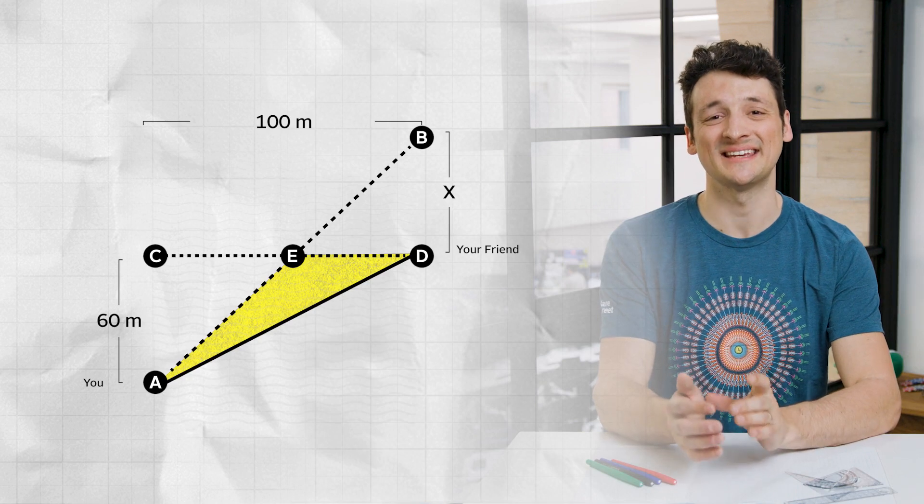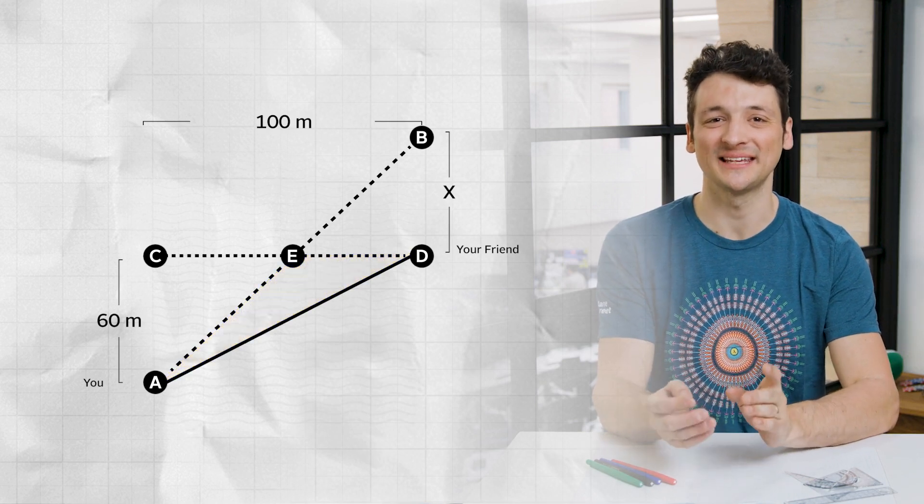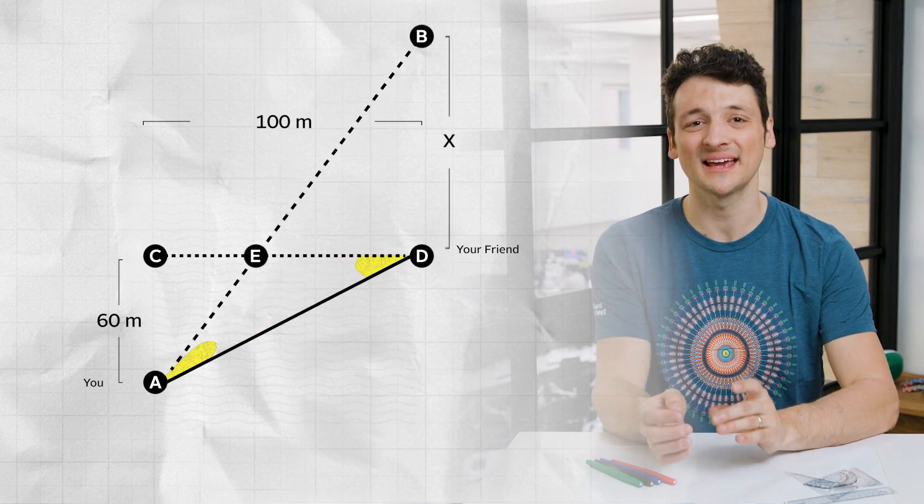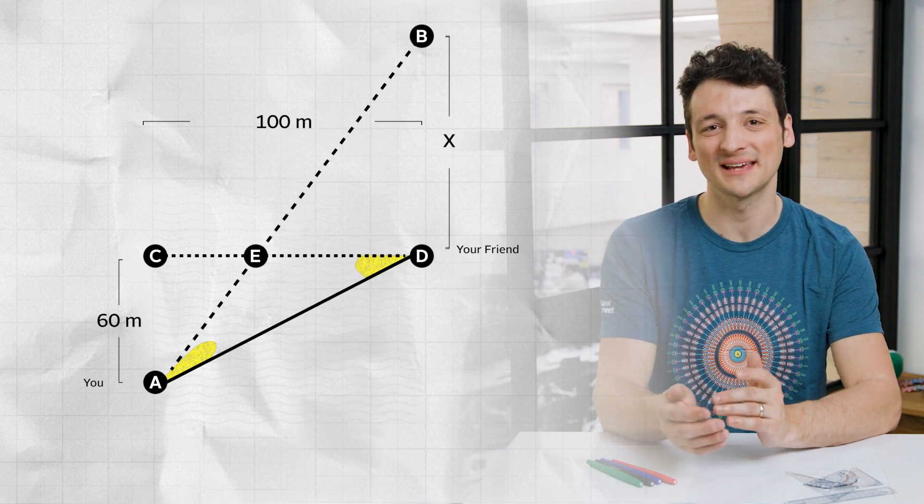This implies triangle ADE is isosceles, and angles EAD and EDA are equal. Let's call this angle theta.